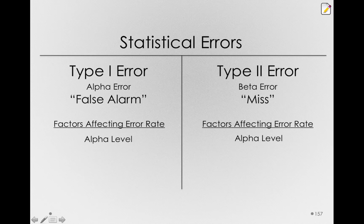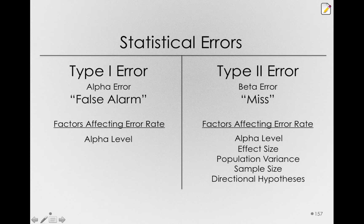On the other side, our type 2 error rate is actually under the control of many factors: the effect size, the variance in the population, our sample size, and whether we're using directional hypotheses. Notice that alpha level is the only factor that's shared between our type 1 and type 2 errors — alpha level will affect both of these.